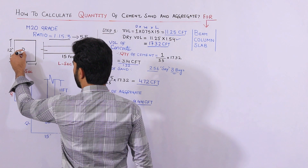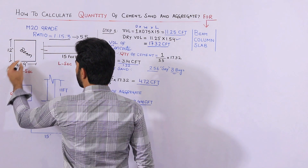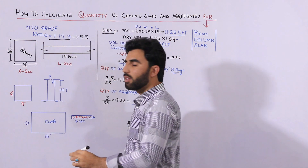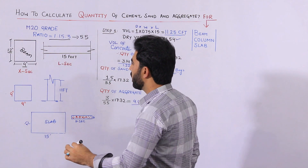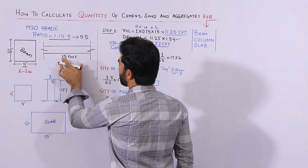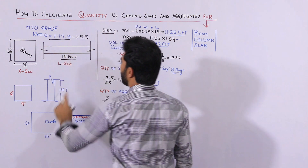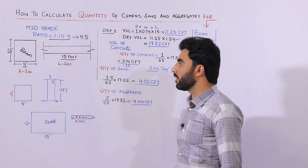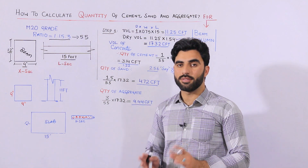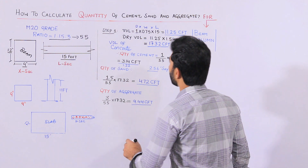The size of the beam is 9 by 12 inches — this is the cross-section and this is the long section. The span, or the length of the beam, is 15 feet. First of all, I will find the volume of the beam, then we will find the quantities of different materials.